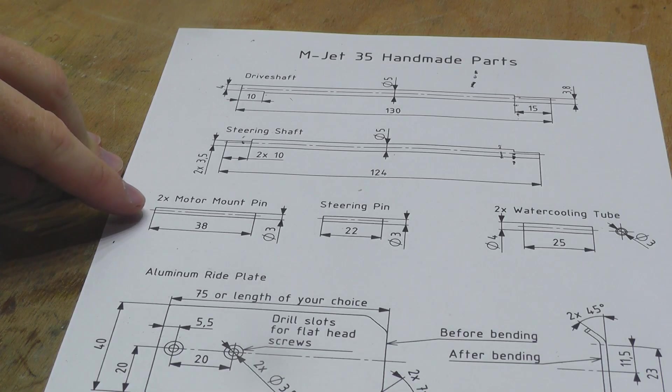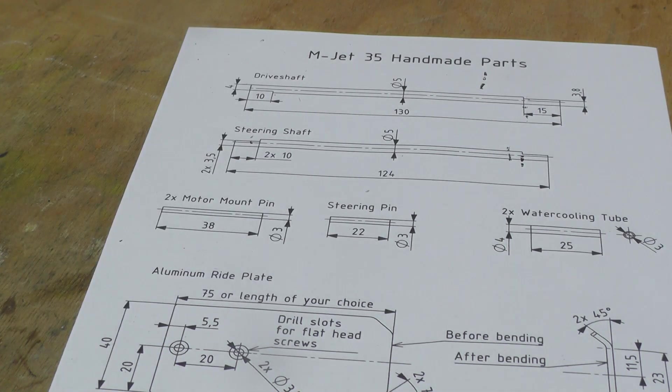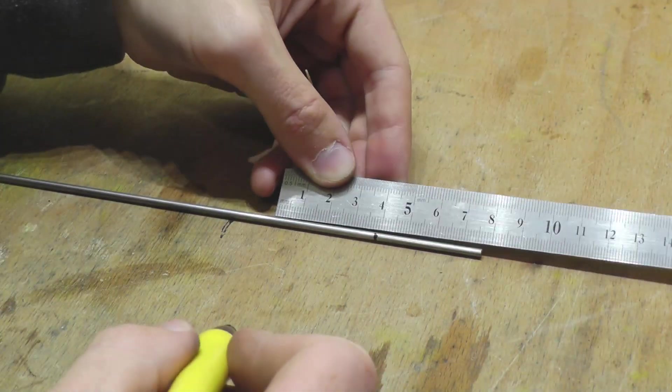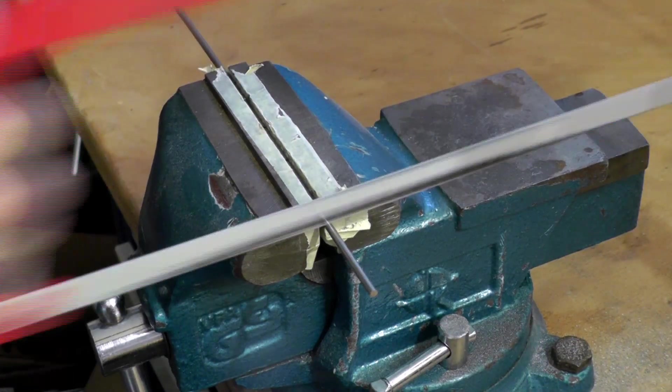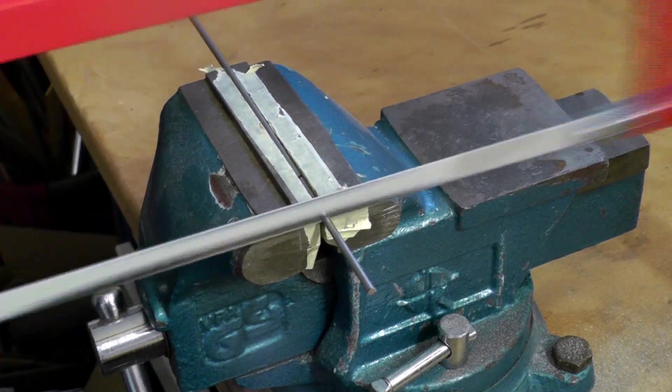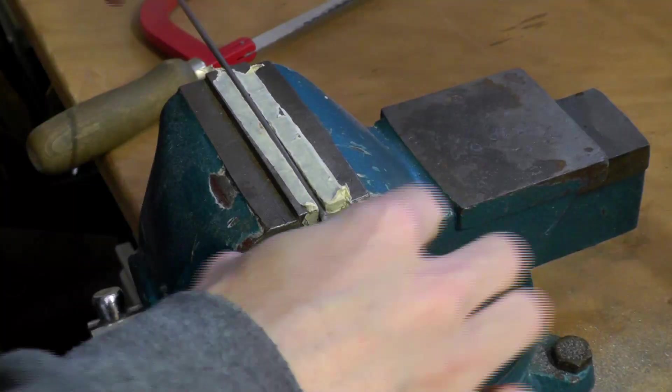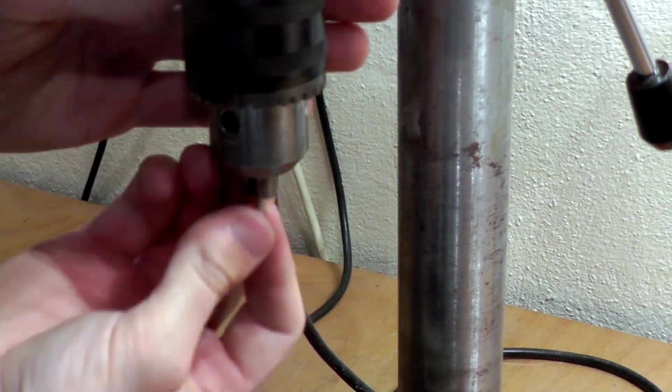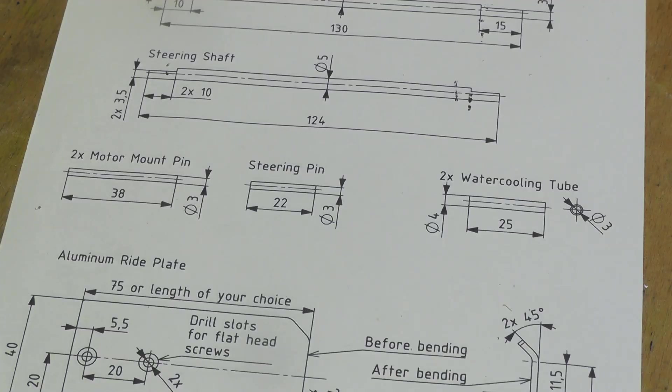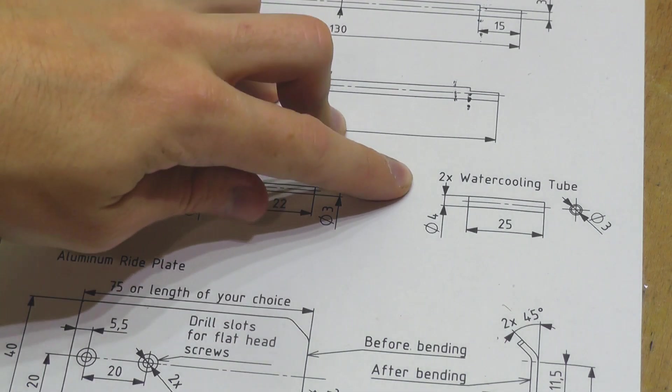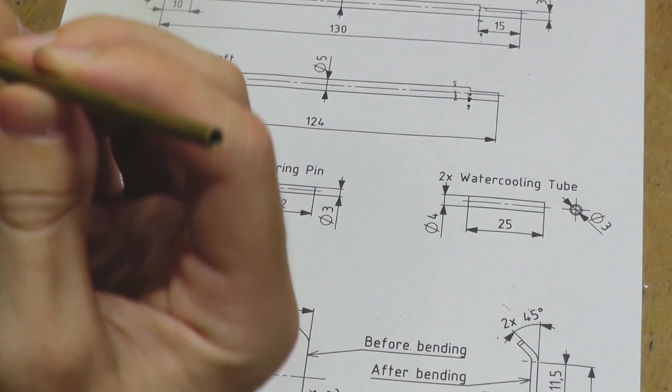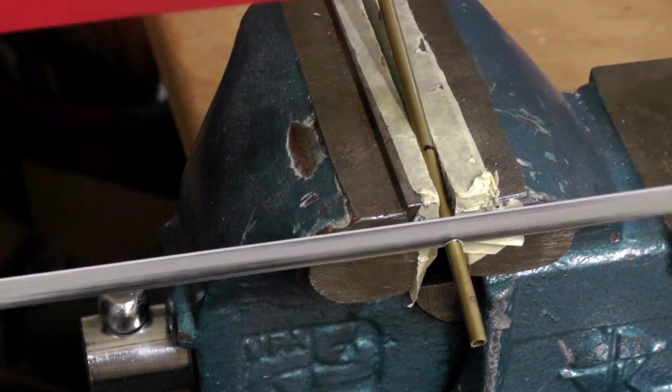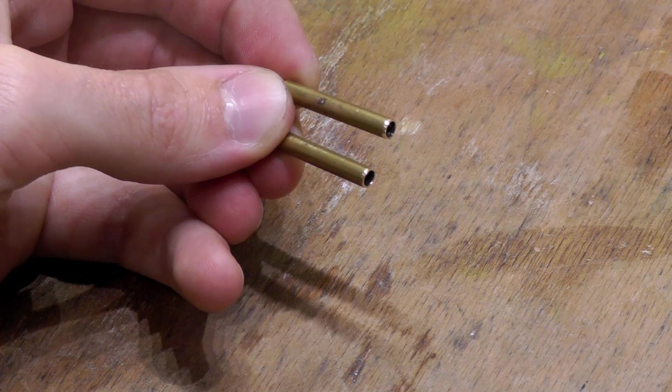I will continue by making the two motor pins and the steering pin. They are cut from a 3mm stainless steel shaft. The next part I will do is the water cooling tube. I will cut two of these from a 4x3 brass pipe. And there we have our water cooling tubes finished.